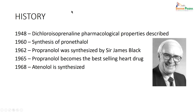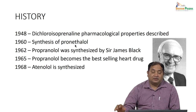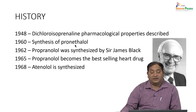Looking at the history of beta blockers: in 1948, dichloroisoproterenol was developed and its pharmacological properties were described. Based on that, in 1960, pronethalol was synthesized. And based on that, propranolol was synthesized by Sir James Black. It was the highest-selling cardiovascular drug, used from 1965. Later on, selective beta blockers were developed and atenolol was synthesized.